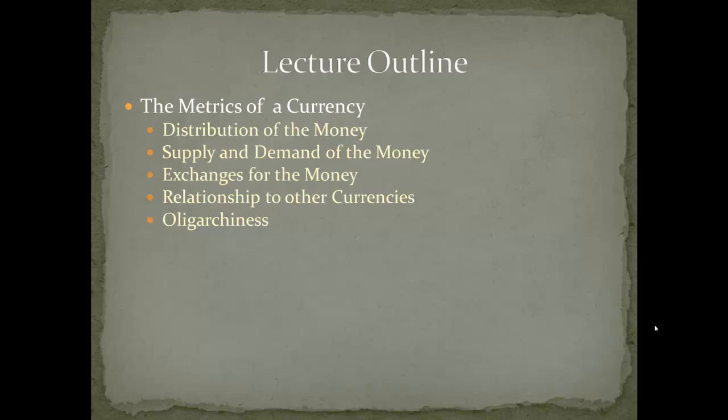So exchanges for money are very important. We're going to discuss them. Relationship to other currencies is another important feature. Certain currencies tend to be deeply interrelated with each other. For example, the US dollar and the euro are incredibly closely connected, as are the US dollar and the yuan and the US dollar and the yen, because of a variety of political and other factors.